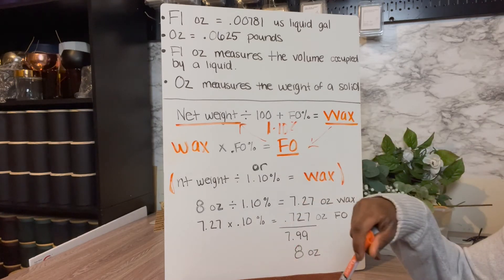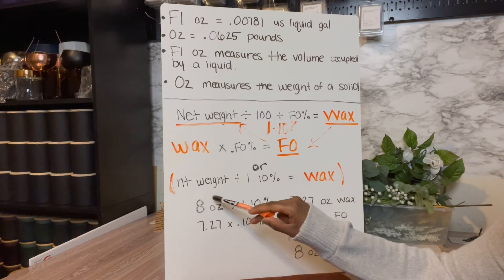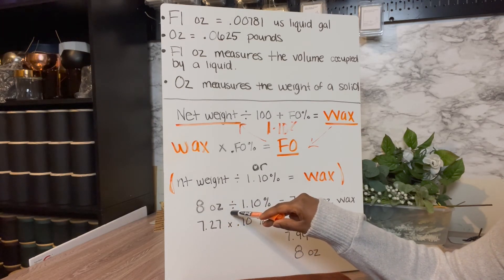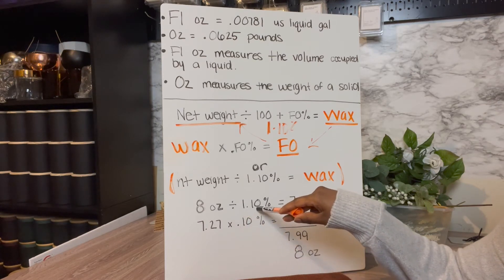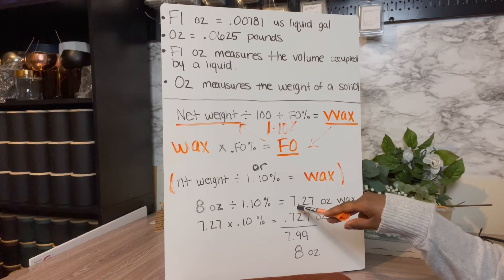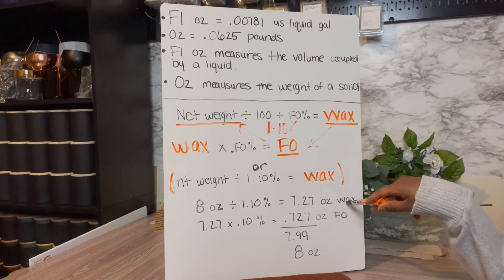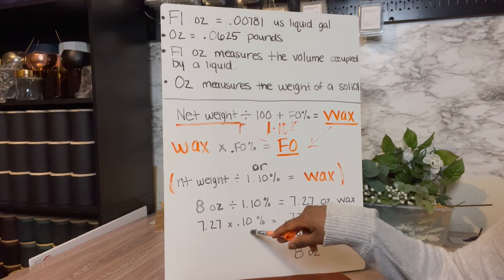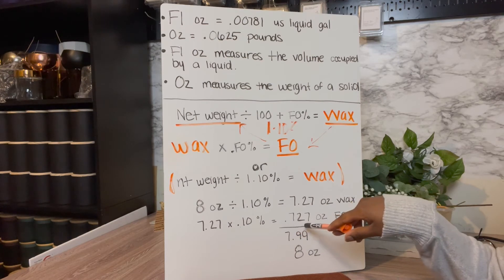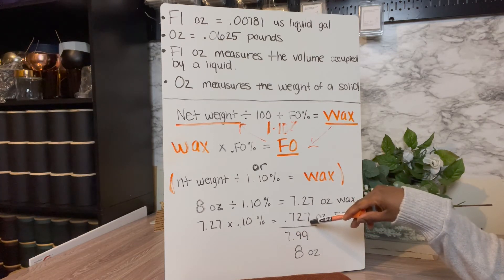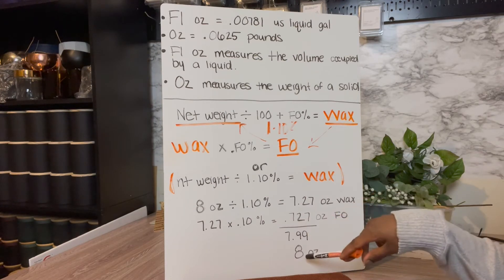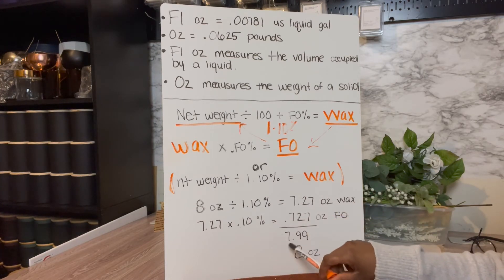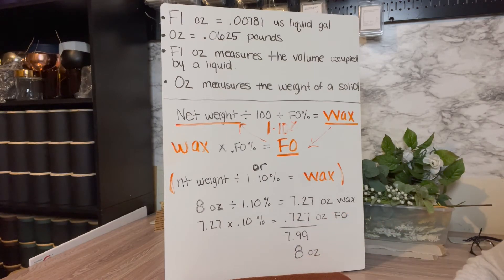So let's plug actual numbers into it now. We have our eight ounce net fill jar divided by 1.10 and that equals a 7.27 ounce net weight of wax. We take our 7.27 ounces, multiply that by our fragrance oil percent, 0.10 and that equals 0.727 ounces in fragrance oil. When I get this, I round up to 0.73 and that will equal my eight ounces. If you don't round up, it'll equal 7.99, but you get the idea.